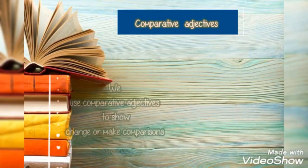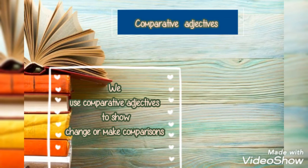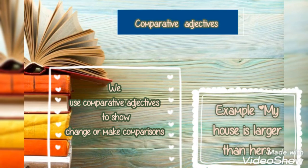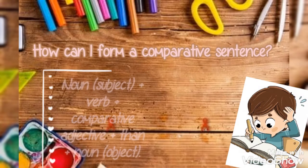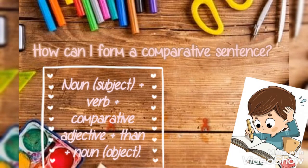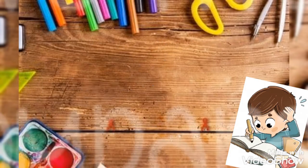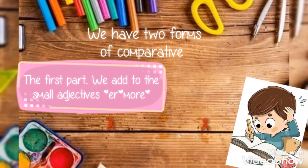Comparative adjectives: we use comparative adjectives to show change or make comparisons. For example, 'My house is larger than hers.' How can I form a comparative sentence? We start with the noun subject plus verb, we add the comparative adjective, and after that we use the important part which is 'than', then we complete.